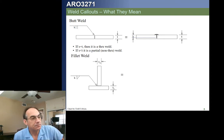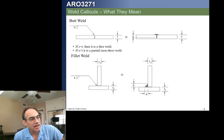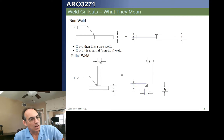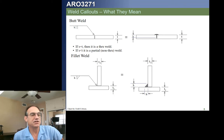This callout on the left means there's a fillet weld on the near side of the arrow. The callout says it's dimension H, it's a fillet weld, and it occurs on the near side. That means it's nestled right there at the corner, and both the horizontal and vertical dimensions of this weld are H.